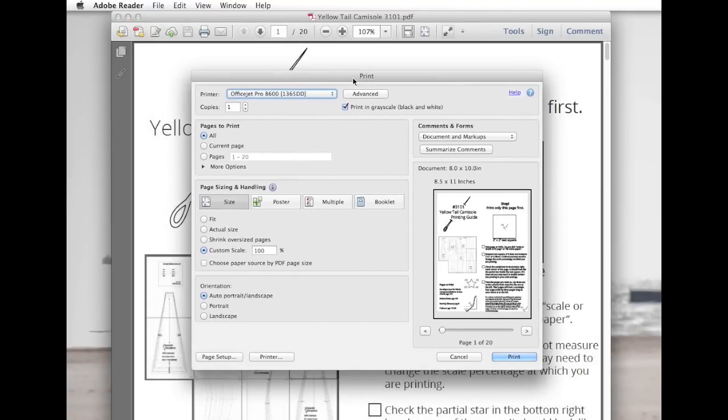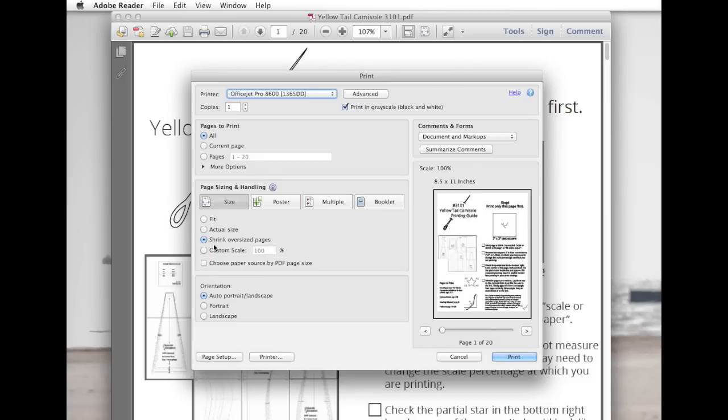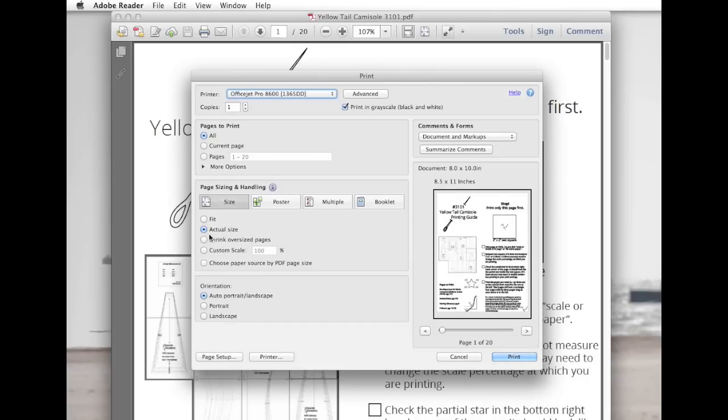Now, mine is automatically set to Custom Scale, but chances are yours will automatically be set to Shrink Oversize Pages or, depending on the program you're using, Shrink to Fit Page or Scale to Fit Page. That's bad. That will give you a pattern that is printed out either too large or too small, and the sizing will be all wonky. So make sure you click something that says Actual Size or Custom Scale and set that Custom Scale to 100%.